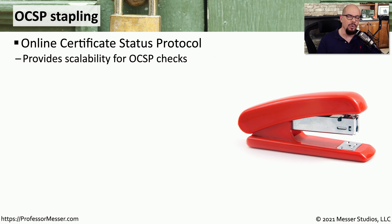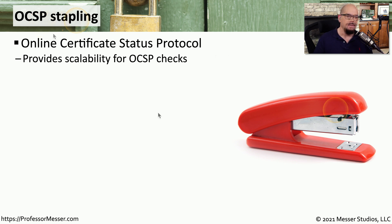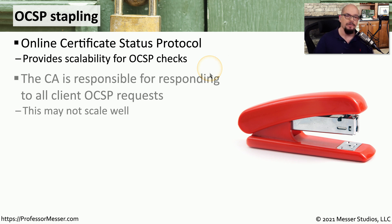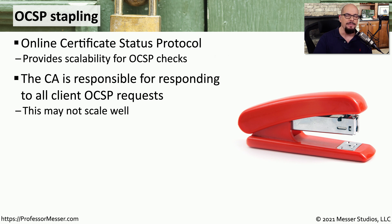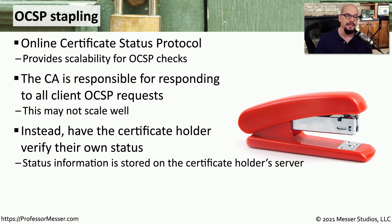One of the challenges we have when working with certificates is knowing if a certificate may have been revoked. There are different ways to check this revocation status, but one of the easiest ways is through OCSP stapling — using the Online Certificate Status Protocol to determine if a certificate may have been revoked. One of the challenges in using OCSP is we have to constantly check back with the certificate authority to see if the certificate is valid. It would be much easier if we were able to make that validation ourselves on a local server.